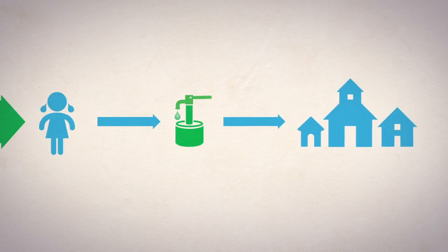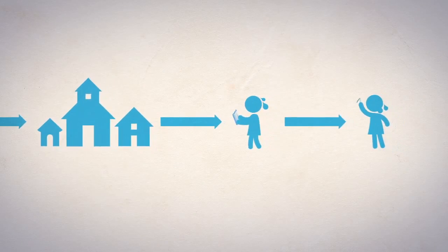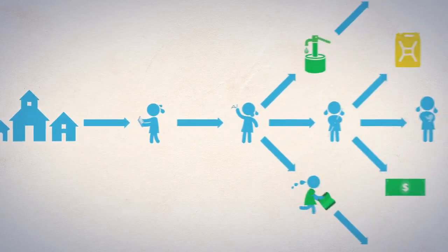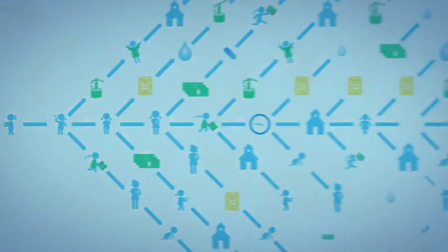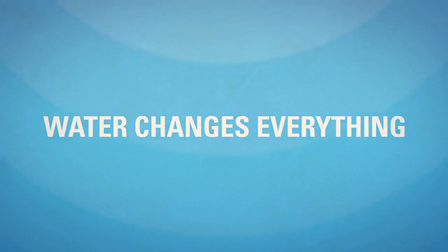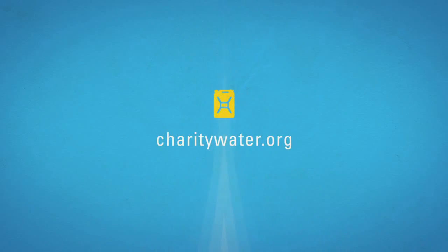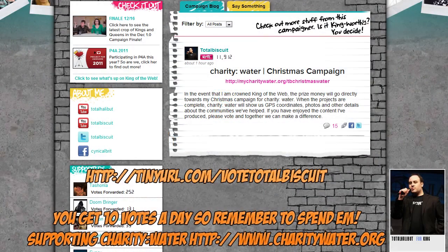So head on over, if you wish to support this project, to tinyurl.com/votetotalbiscuit. That's tinyurl.com/votetotalbiscuit. The purpose of which is simply to sign up to the site. You sign up, you get a verification email, and then you can start voting. And you can vote 10 times a day with the vote points that they give you. Simple as that, really.